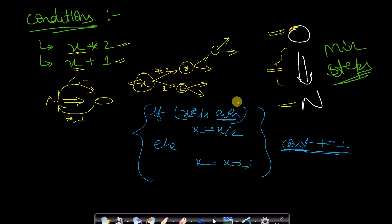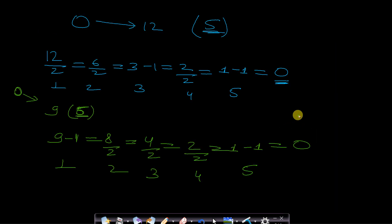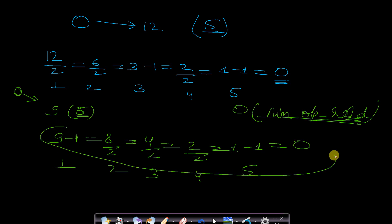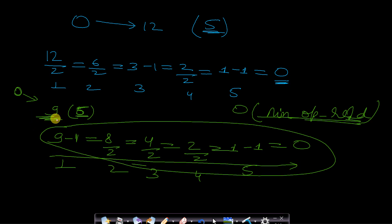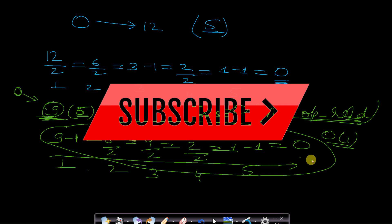I hope you got the idea. You should be able to write the code yourself — I will provide the code in the description below. The time complexity is O(minimum operations required), since we are only performing the minimum number of operations on n. Space complexity is O(1) because we are not taking any extra space. If you find any difficulty, comment below and I'll try to help. Like, share, and subscribe to watch more programming videos — see you next time!